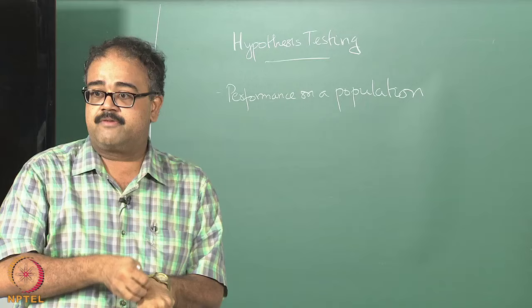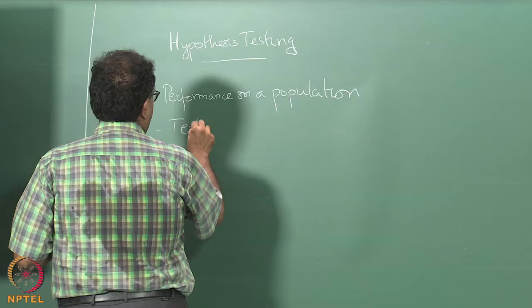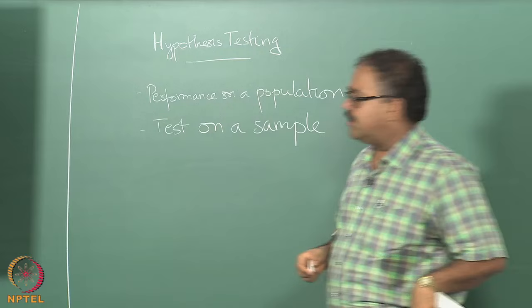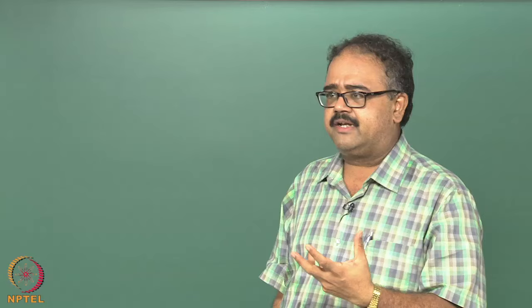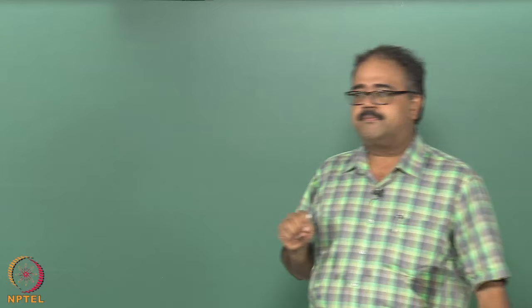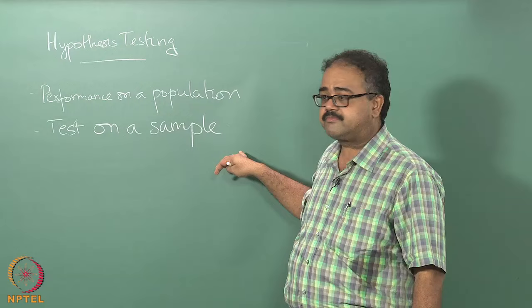We want to measure performance on a population, but all we get to do is test on a sample. Whether we do cross-validation, bootstrap, or set aside a validation set, it is always a sample. What I am really interested in is how my algorithm will perform on the entire population, governed by P(X,Y) — which I do not have access to.